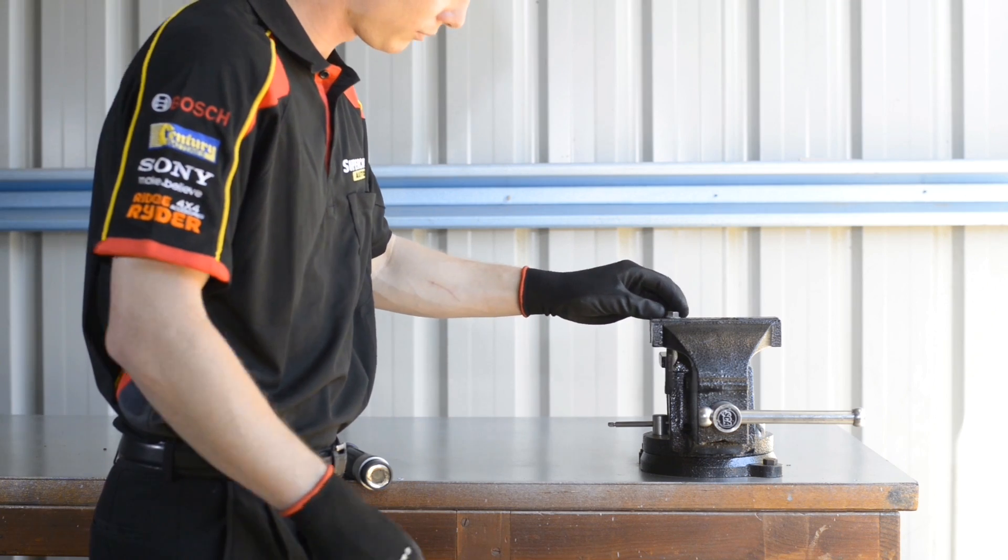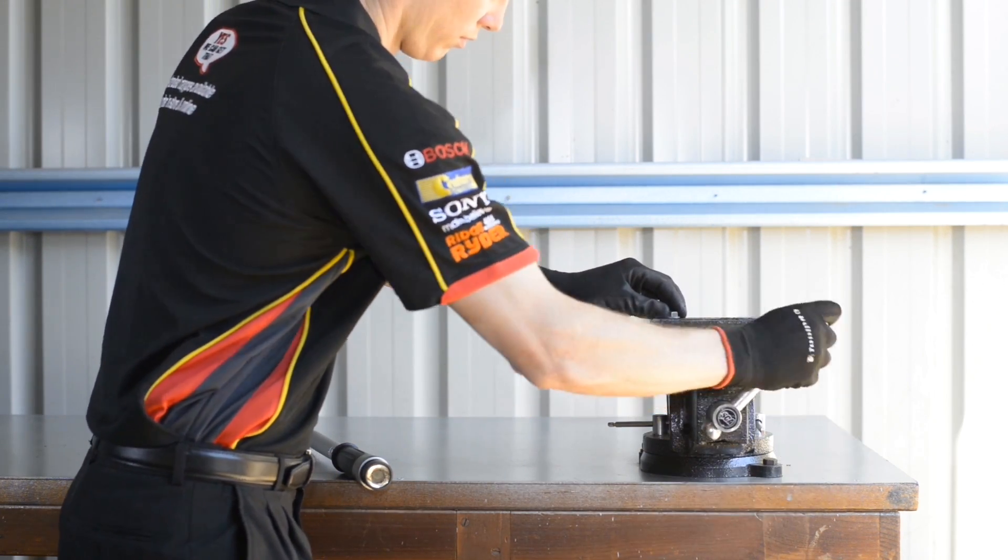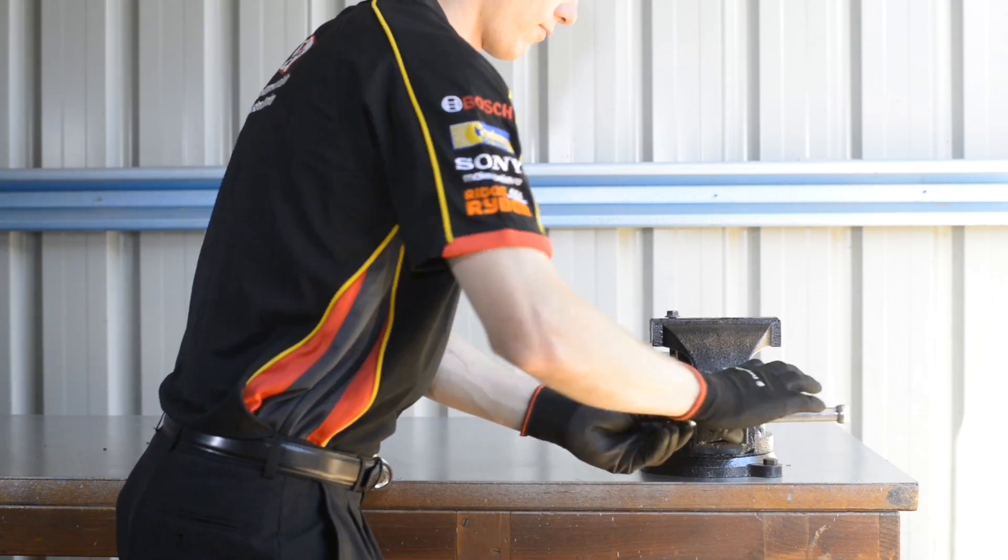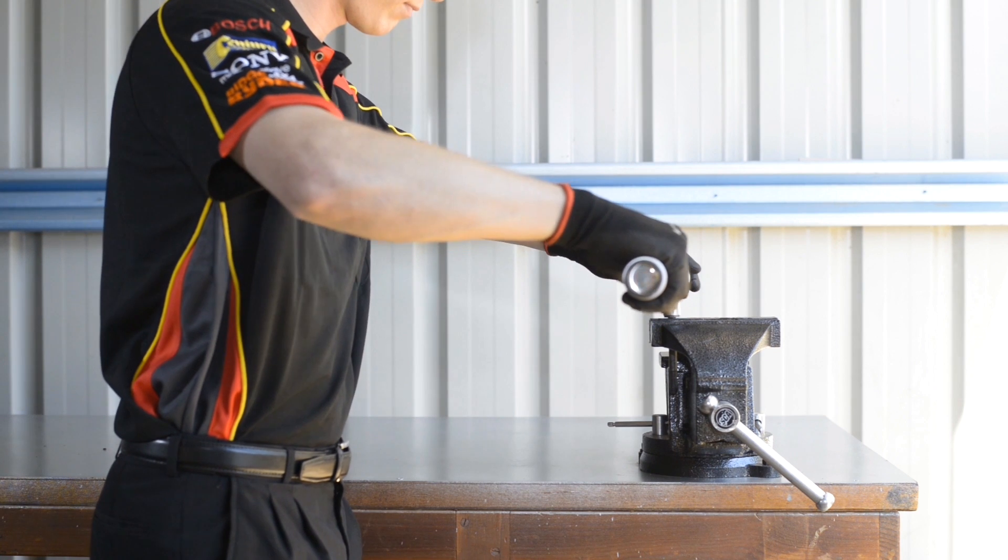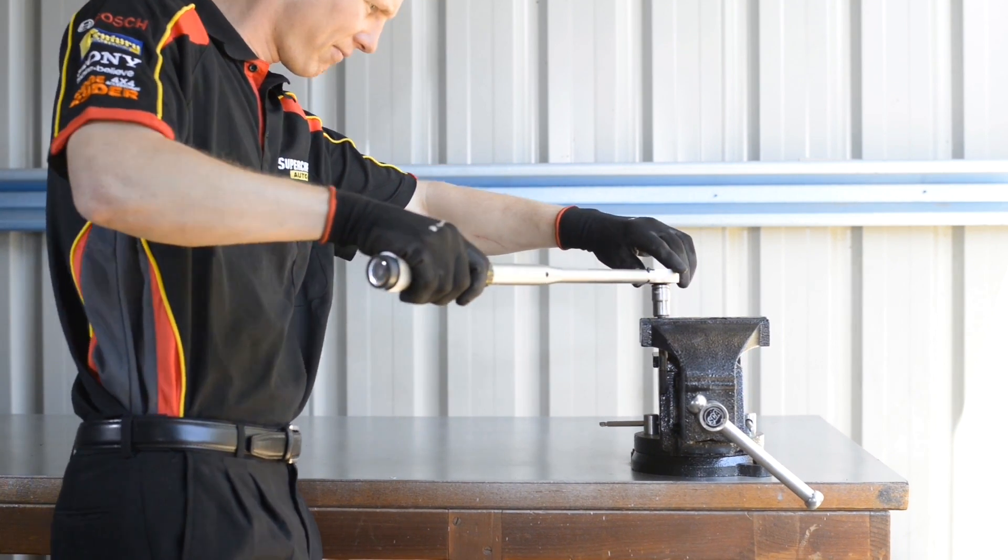Before using a ToolPro torque wrench for the first time or after a prolonged period without use, your torque wrench must be set to a high torque setting and activated 5 to 10 times to ensure that the internal parts are free and well lubricated for maximum accuracy.